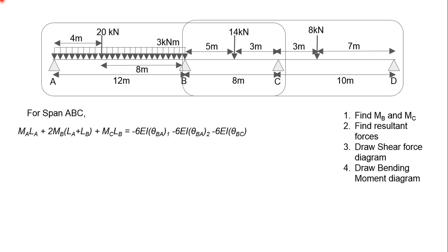So for span ABC, this is the standard formula you'll be using. First, we'll take a look at the left-hand side. Do take note that there's a 0 here because we are taking the moment at A. For LA and LB, LA will be the length of A to B and LB will be the length of B to C. Hence, you sub in the values and you'll get 40MB plus MC.